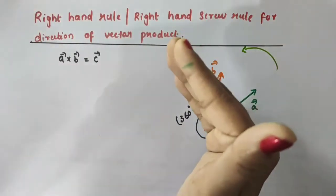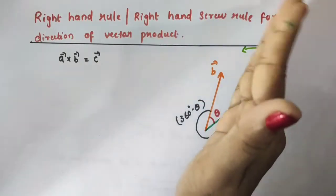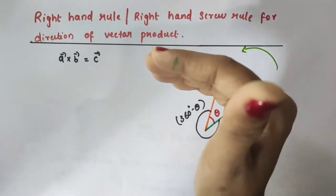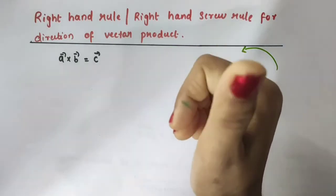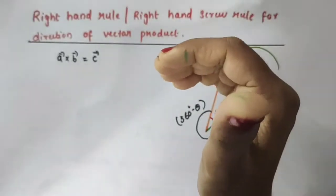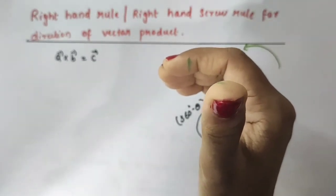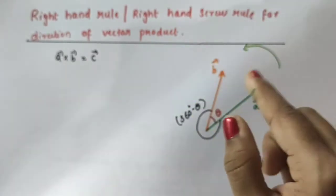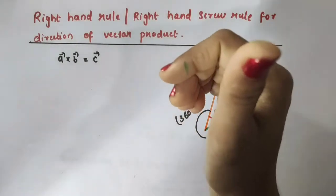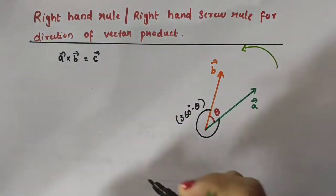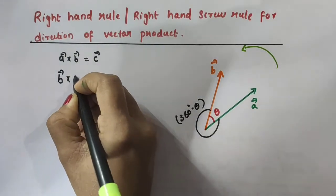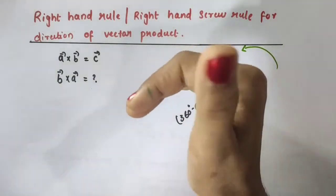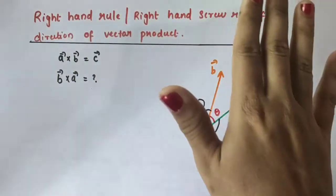When we curl our fingers from vector A to vector B, the thumb points in the direction of vector C. My thumb actually points in the direction which is out of the plane containing vector A and vector B — out of the plane of this paper. So vector C is directed out of the plane containing vector A and vector B.